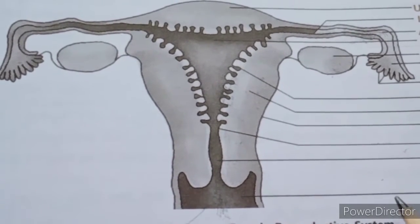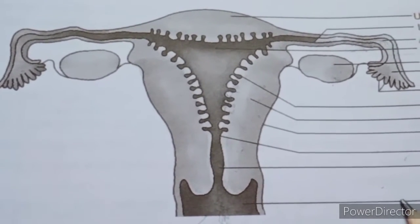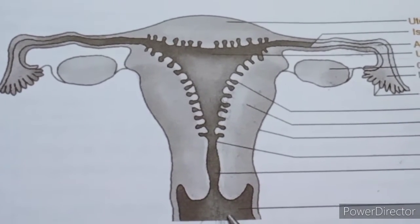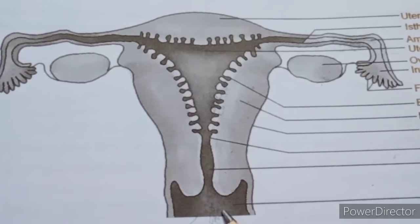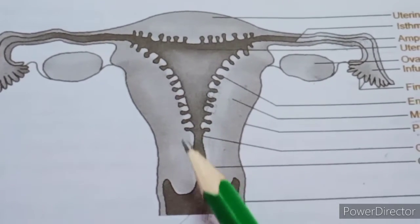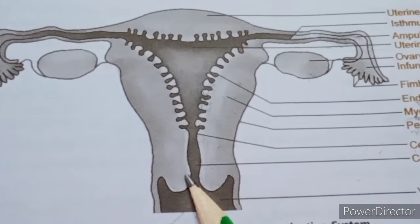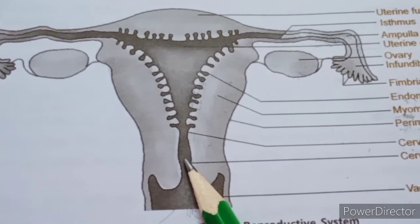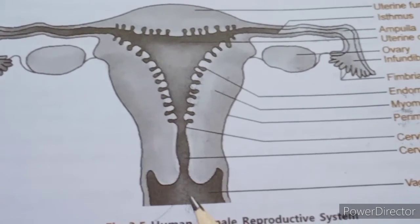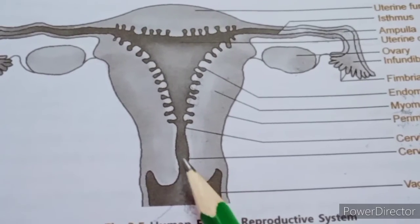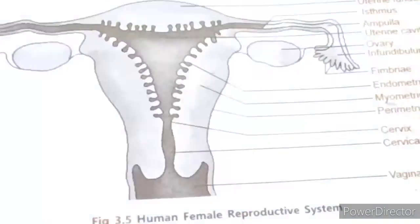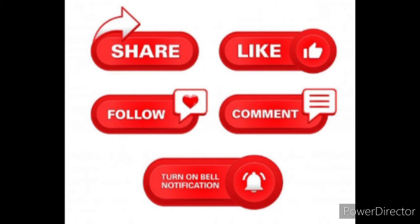The last part of the female reproductive system is the vagina, which is the birth pore. Functions of the vagina: it receives the male's penis during copulation or intercourse; it acts as a passage for menstruation, through which blood and mucus along with the ovum are released outside; and it serves as the passage for the fetus at the time of delivery.